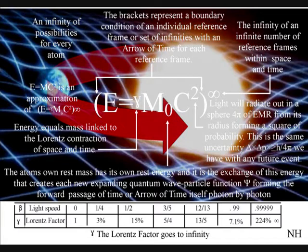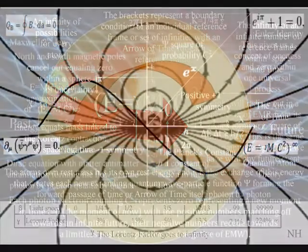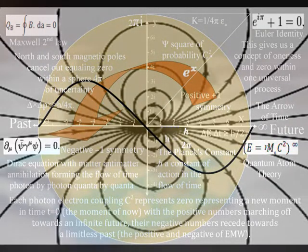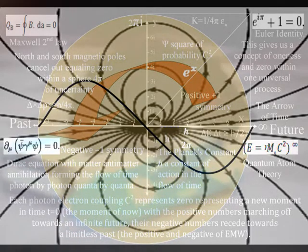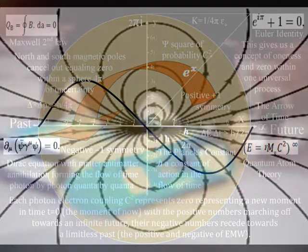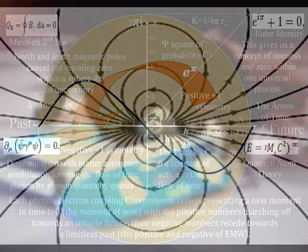Each photon-electron coupling represents zero, representing a new moment in time, the moment of now, with the positive numbers marching off towards an infinite future and the negative numbers receding towards the limitless past, the positive and negative of electromagnetic waves. It will help in the promotion of this theory.